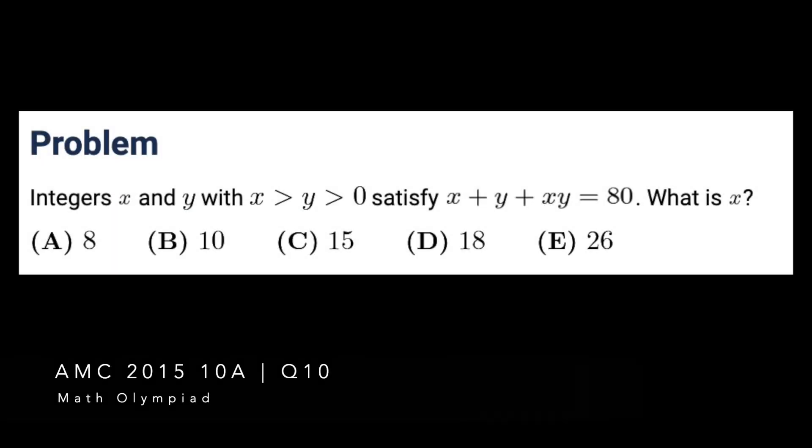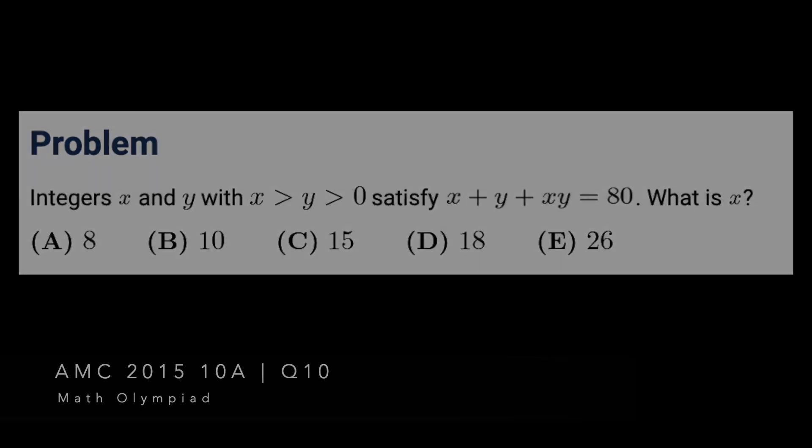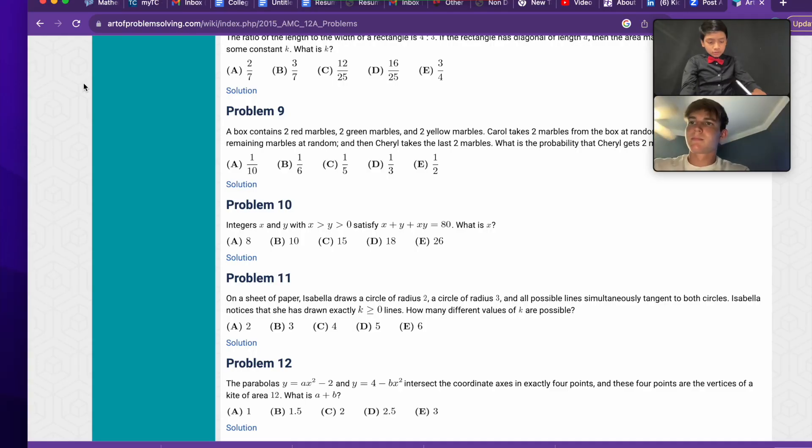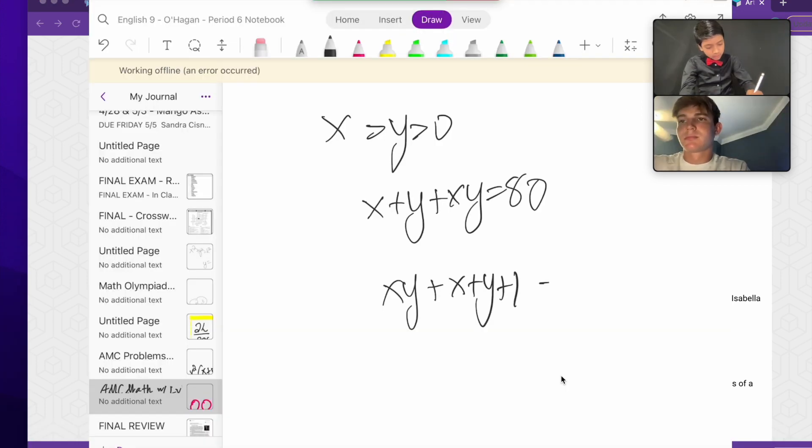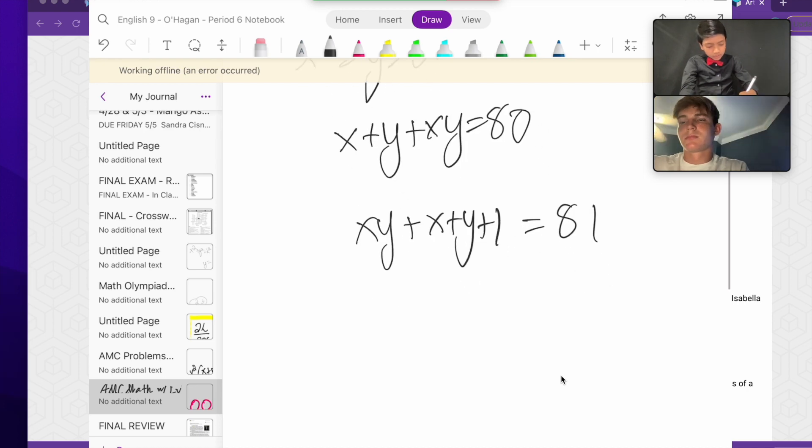Let's try number 10. Integers x and y with x greater than y, which is greater than zero, satisfy... wait a second, that's Simon's favorite factoring trick problem. So (x+1) times (y+1) is equal to 81.